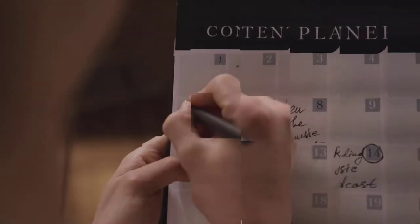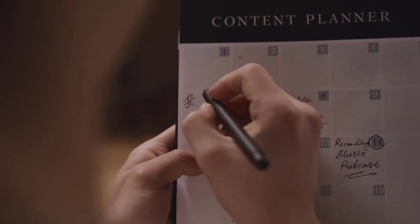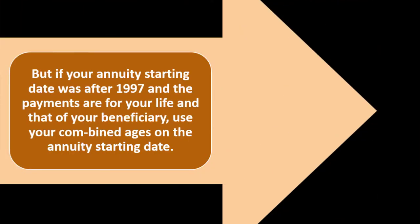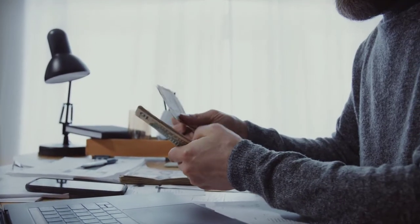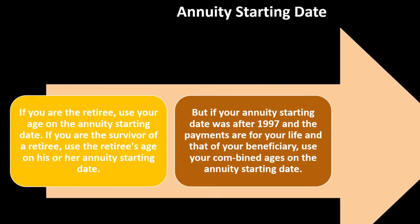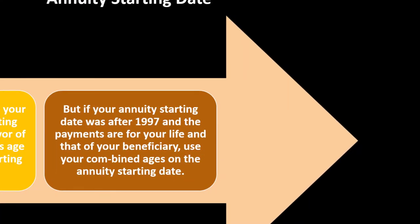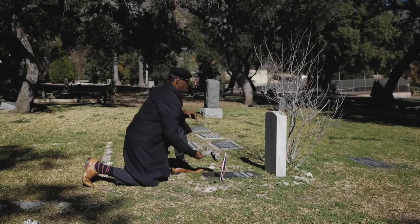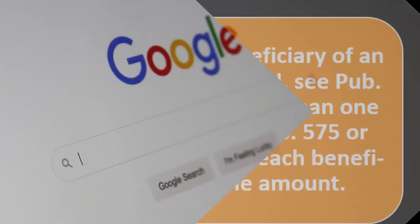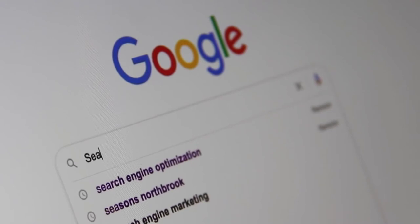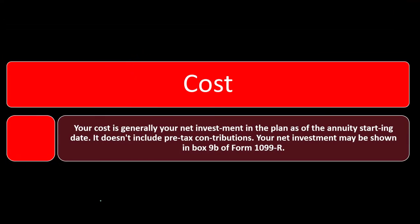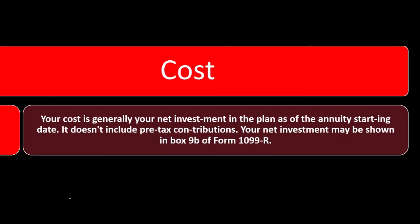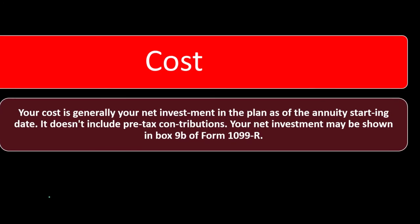If you are the retiree, use your age on the annuity starting date. If you are the survivor of a retiree, use the retiree's age on his or her annuity starting date. But if your annuity starting date was after 1997 and the payments are for your life and that of your beneficiary, use your combined ages on the annuity starting date. An annuity is basically a series of set payments for a particular time frame, usually based on conditions such as the life expectancy of an individual. Your cost is generally your net investment in the plan as of the annuity starting date; it doesn't include pre-tax contributions.